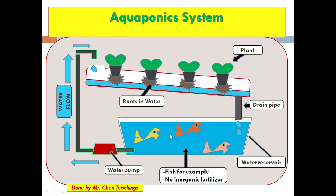Key points and differences: no inorganic fertilizer is used in this system. The fish produce waste that provides all the nutrients the plants use. This system is organic — no inorganic nutrients are added to the plants. This system can also be placed in greenhouses, done indoors, and vertically.